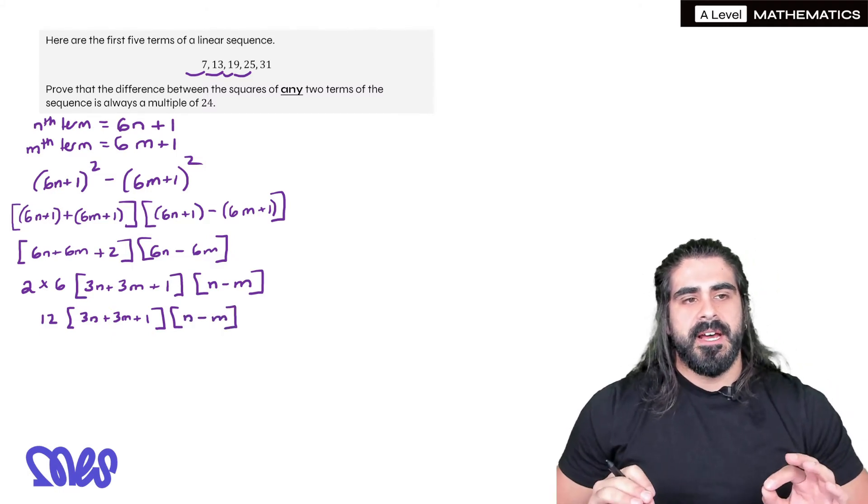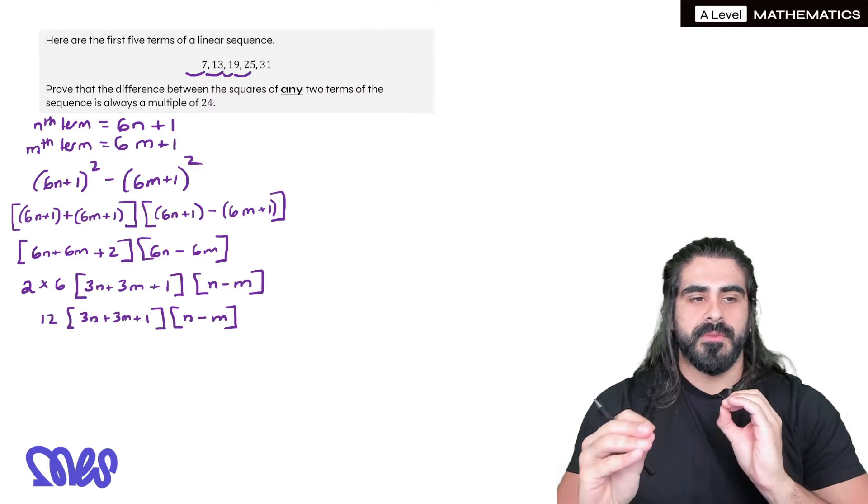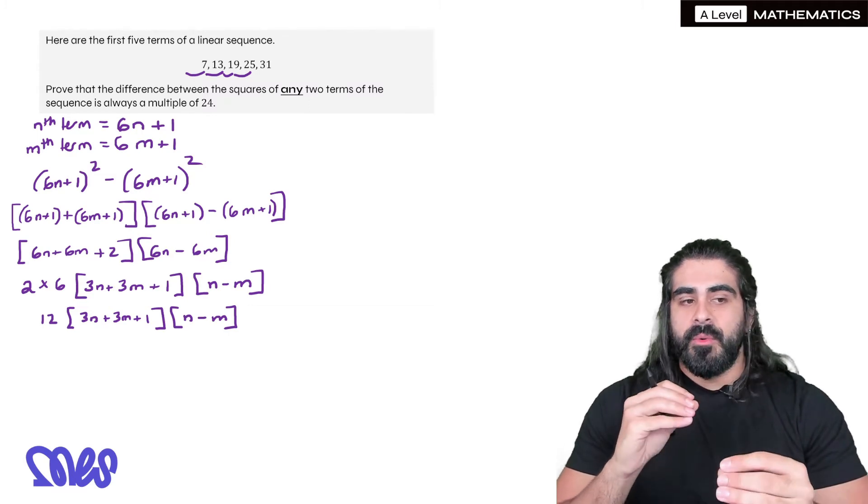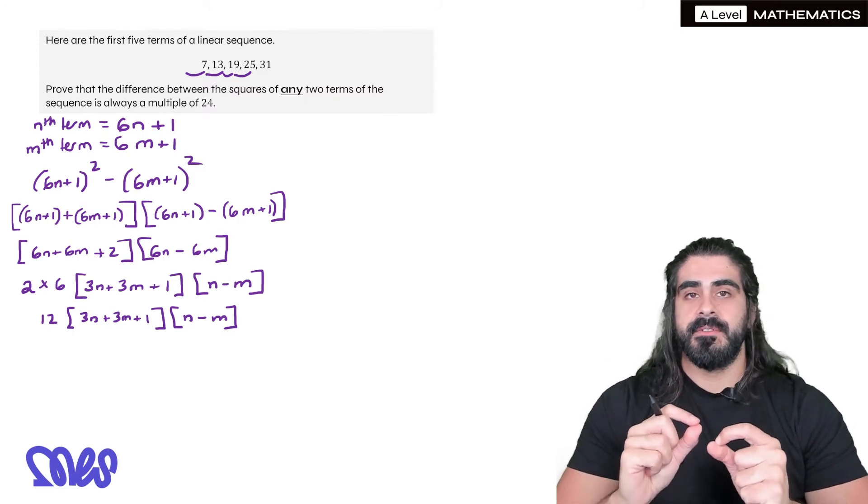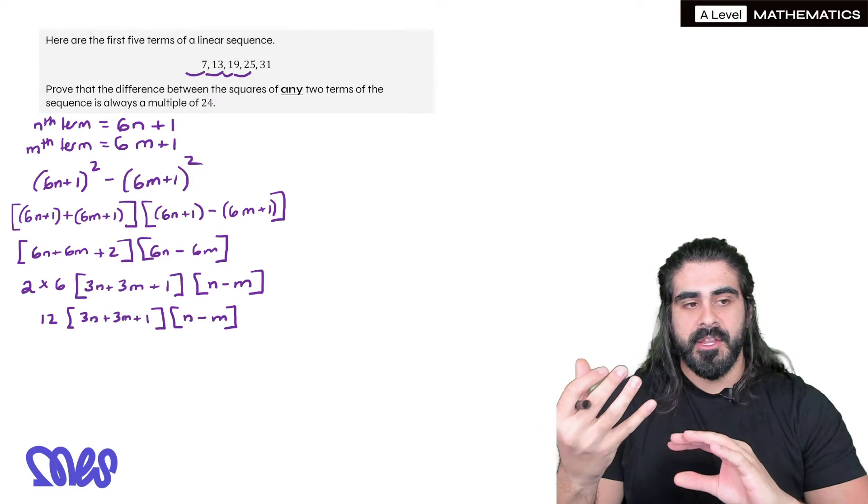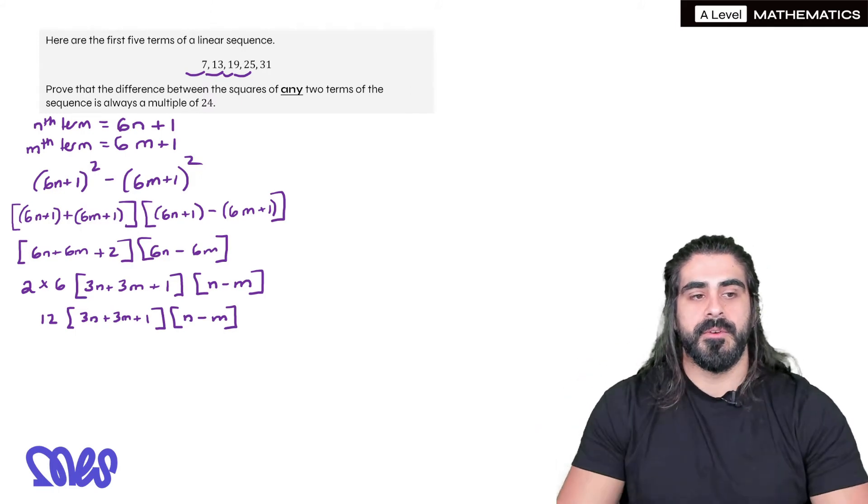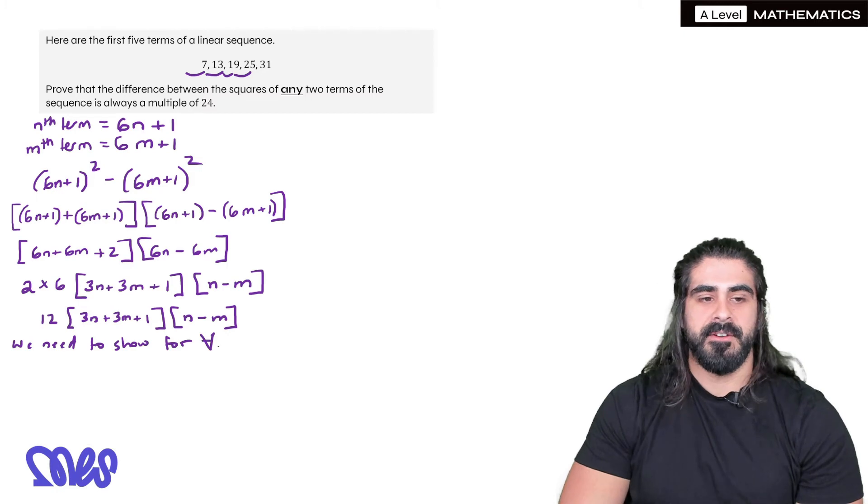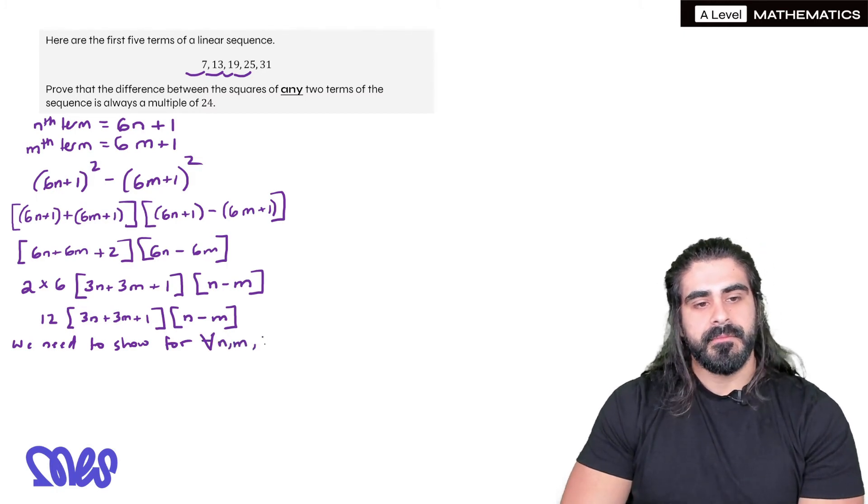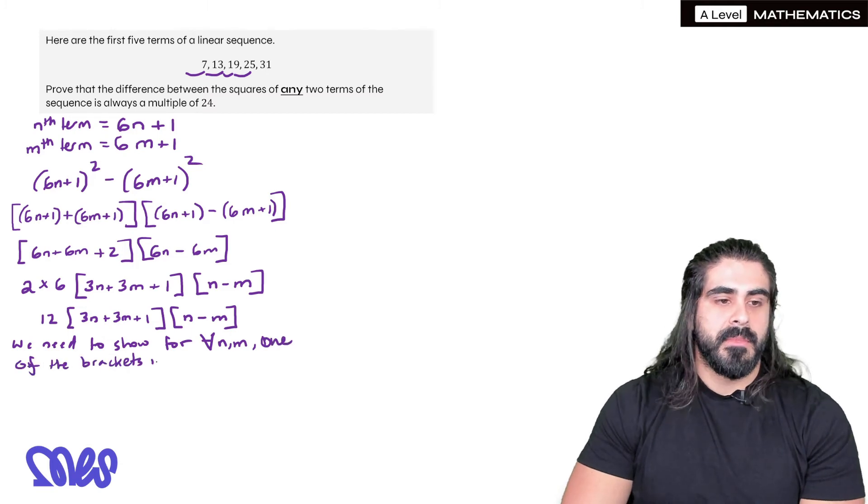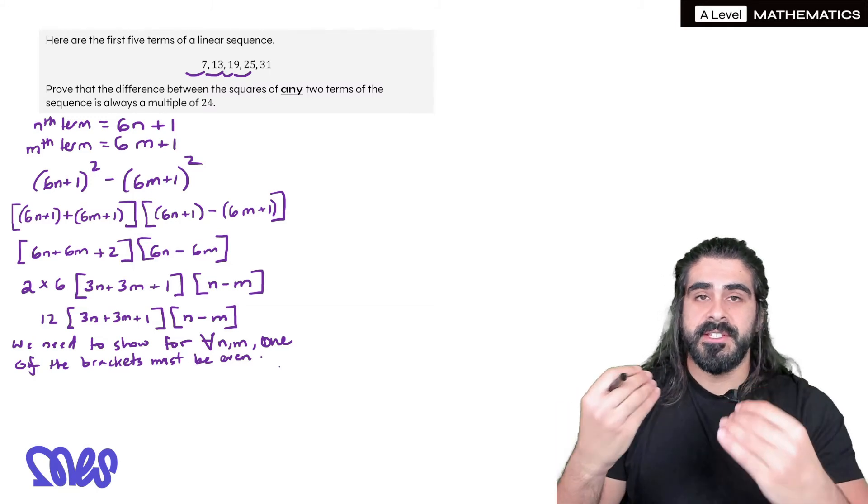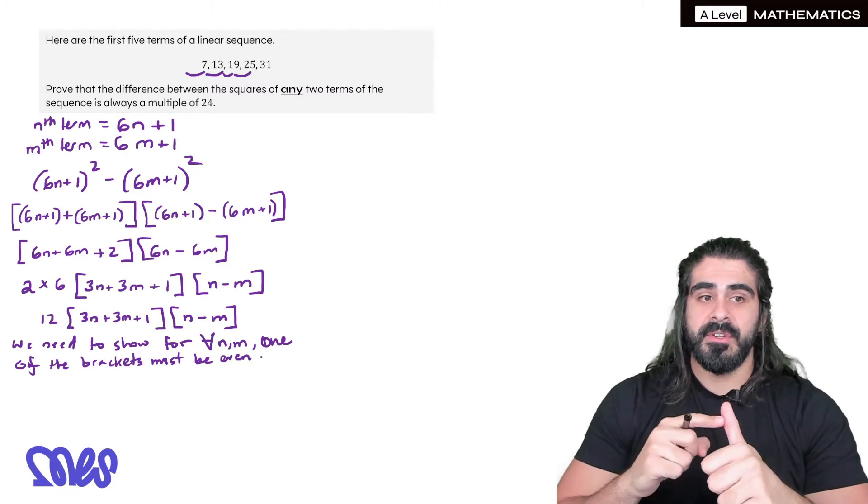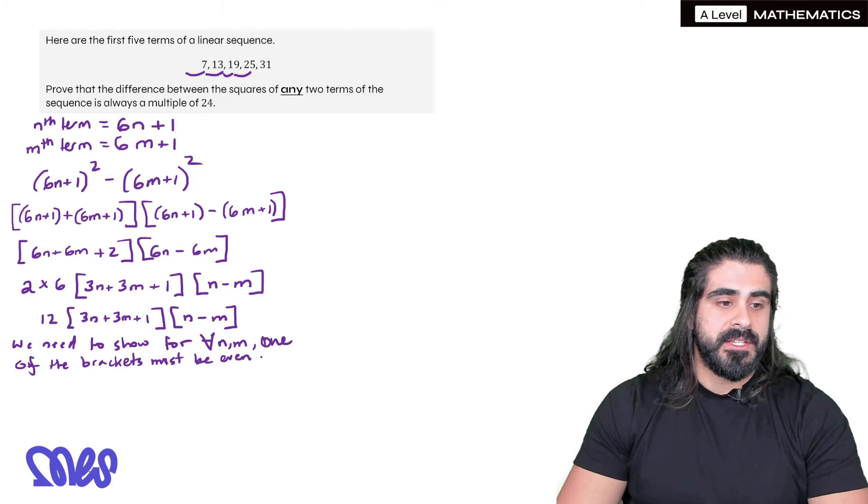Well, that just leaves us with 12 lots of 3n plus 3m plus 1 times n minus m. So what we've just shown is that the difference between the squares is always a multiple of 12. Well that's not good enough, we need to show 24, which means we need to prove that no matter what n and m are, at least one of those brackets has to be even, because if it's even it's a multiple of 2, and then a multiple of 2 times 12 will then give you a multiple of 24. So we need to show for all n and m, one of the brackets must be even. Now the only way to do that is to consider the different cases for n and m. What happens if n is even and m is even, or n is even and m is odd, or both of them are odd. So we need to consider the different cases.